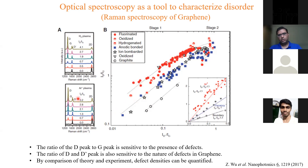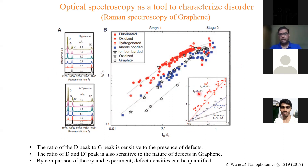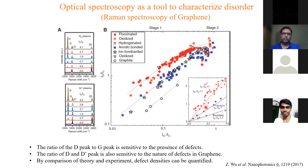Not only can you quantify the amount of defects, but you can also identify what kind of defects are present. The ratio of the D to D' peak is sensitive to defect type. For sp3-hybridized bonds from functionalization, the D to D' ratio is around 13. For vacancy defects it is typically around 7, and for edges or boundaries the ratio is different. By quantifying these intensity ratios you can determine what kind of defect is present in your sample.